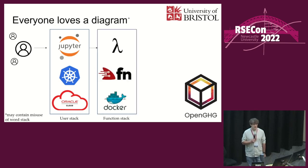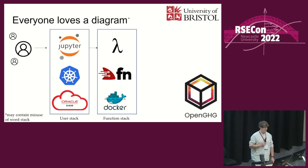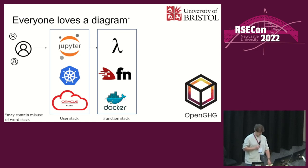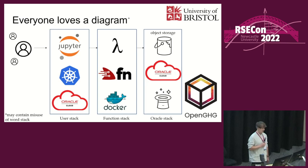I wasn't really sure what logo to use for serverless functions - there wasn't a good one - so I've just used the Lambda logo, which is obviously AWS Lambda, but it was the easiest thing I could do. We're using FN behind the scenes, which is quite nice and easy to set up. FN spins up a Docker container containing your function and does all the computation behind the scenes. We're also using the Oracle Object Store, which is a nice simple way of storing quite a lot of data in the format you want.